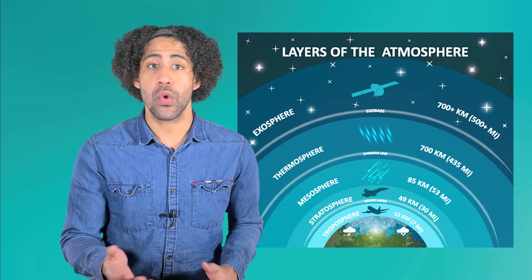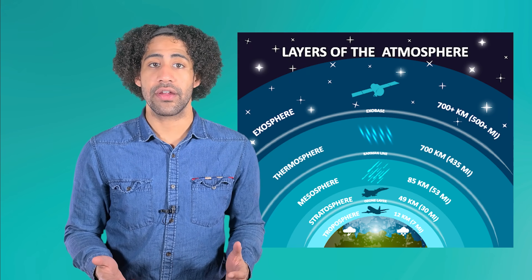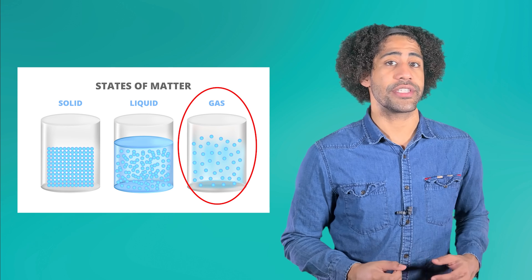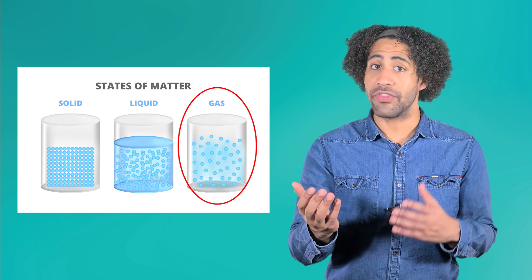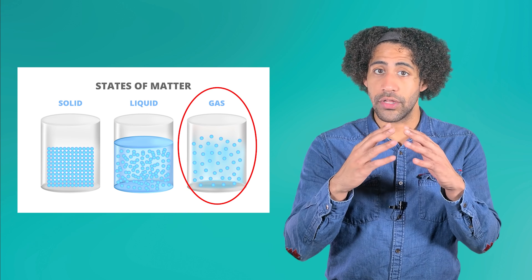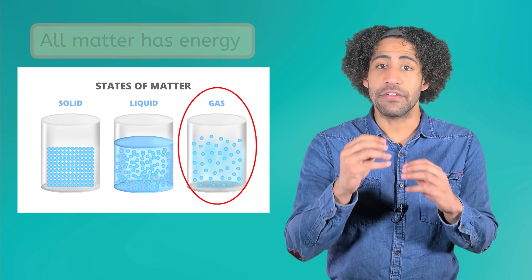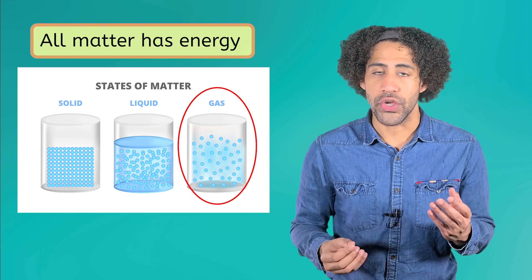We've learned that everything in our universe is either matter or energy. Our atmosphere, or the sphere containing Earth's air, is made of matter primarily in the gaseous state. But matter and the different kinds of energy are closely interconnected. In fact, all matter also has energy.